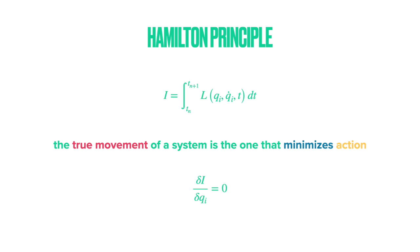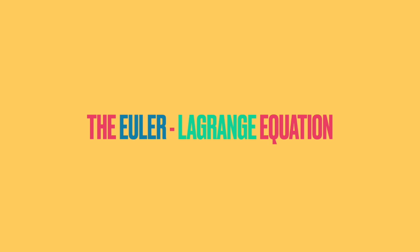Applying the stationarity condition, that is, setting the functional derivative equal to zero, we get the Euler-Lagrange equation.